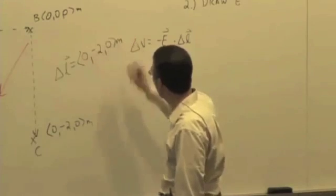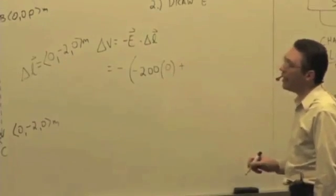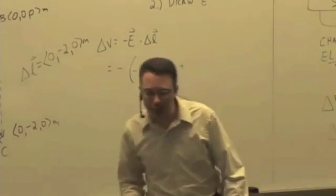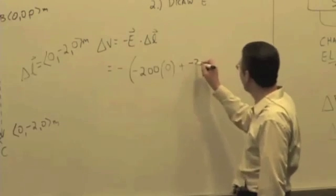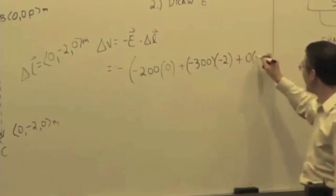zero, negative 2, zero meters, times zero, plus negative 600, or excuse me, negative 300, times negative 2, plus zero times zero.